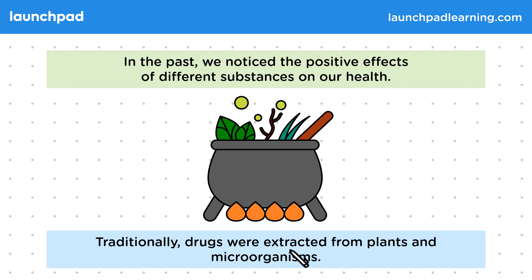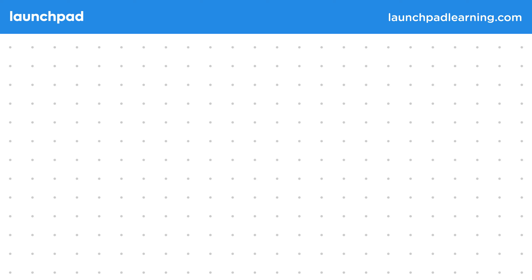Traditionally, drugs were extracted from plants and microorganisms. For the exams, you need to be able to state that we originally extracted drugs from plants and microorganisms. What are some examples of plants and microorganisms we have extracted drugs from? The following are all examples of origins of drugs that you should be aware of for the exam.